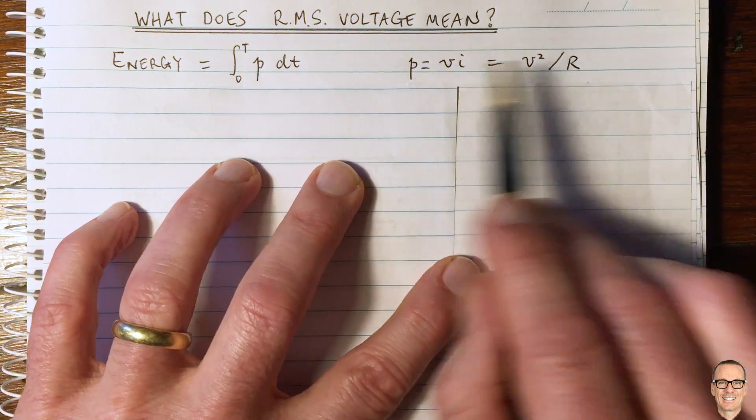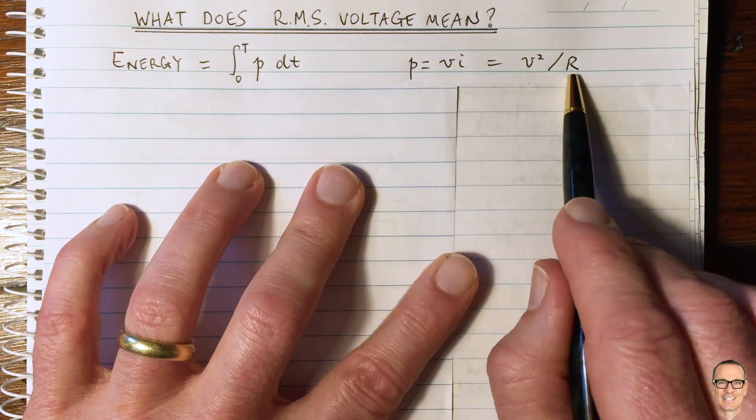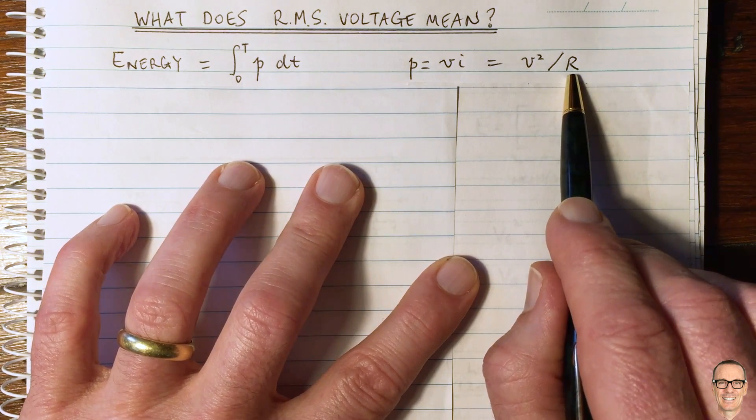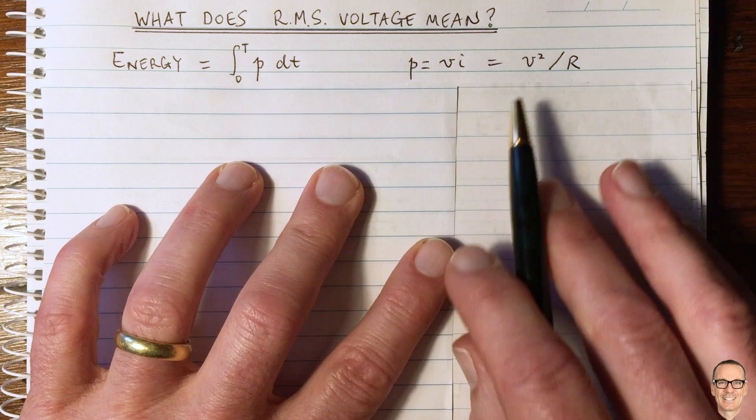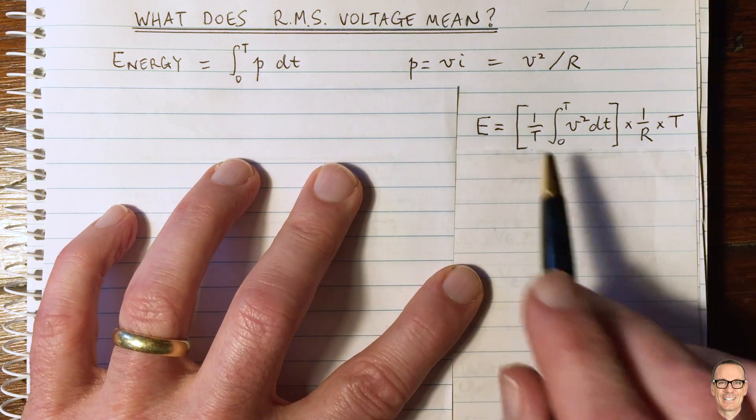So if we substitute this into this integral, the resistance R is constant, so that can come out of the integral. And you can rewrite the energy in this way here.